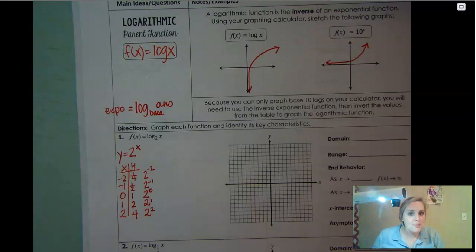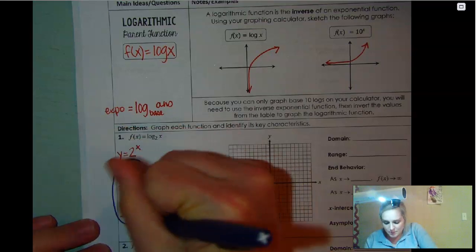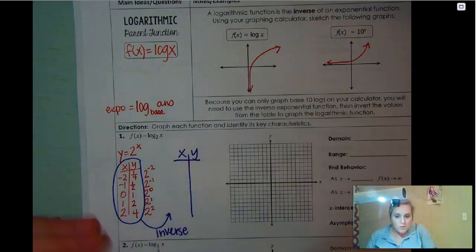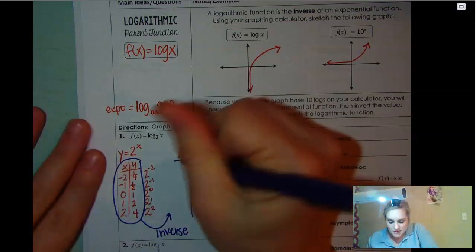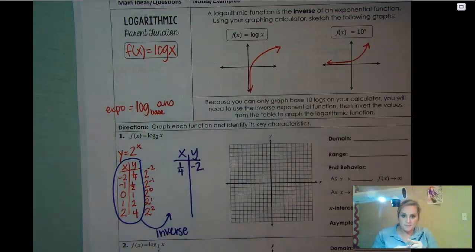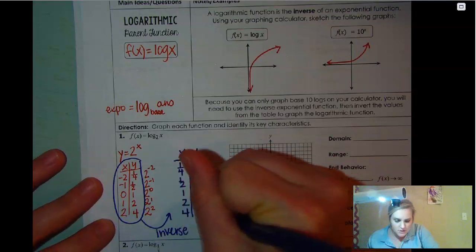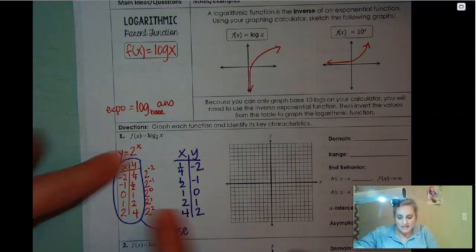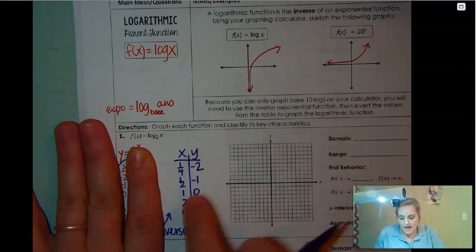That's if it was exponential, but it's not exponential. It's logarithmic. Now logarithmic is the inverse. So what I'm going to do is I'm going to take this table here and I am going to switch it. Now, it's still going to be labeled x and y. What has changed is the position of your x and y. Your x is going to become the y and the y is going to become the x. So this is going to be one fourth, negative two. Then it's going to be one half, negative one, one zero, two one, four two. They swap.